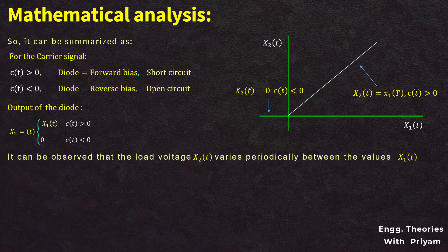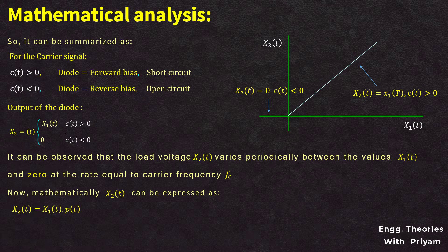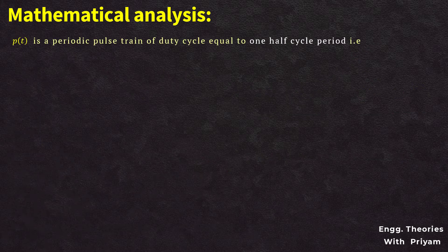In order to represent the signal x2(t), we need to multiply x1(t) by a signal which has the value 1 for one half of the time period and 0 for the other half — i.e., a duty cycle of 50%. This type of signal is known as a periodic pulse train, denoted by p(t). So x2(t) = x1(t)·p(t), which can be written as x2(t) = [m(t) + Ac·cos(2π·fc·t)]·p(t). This is identified as equation number 2.